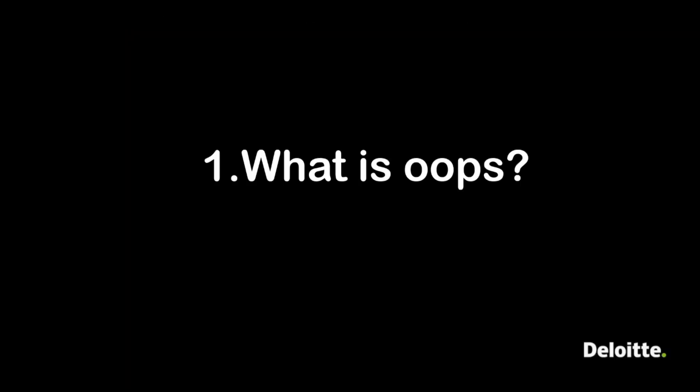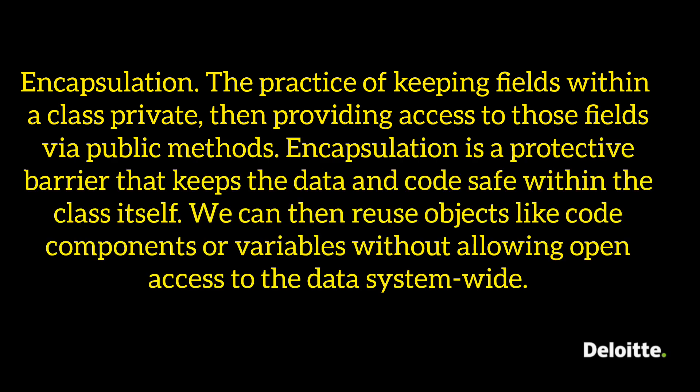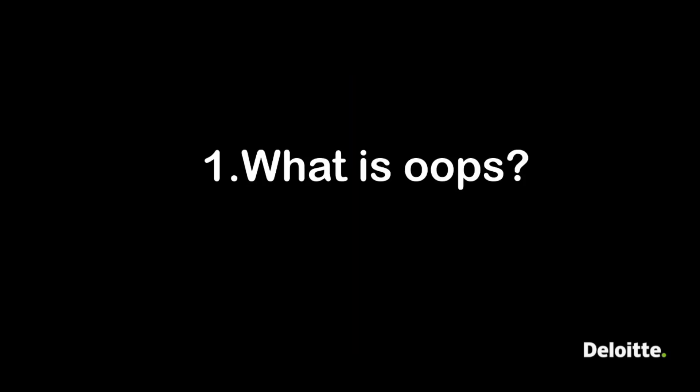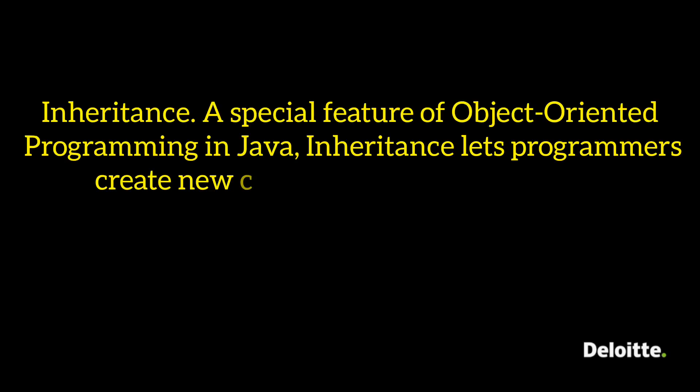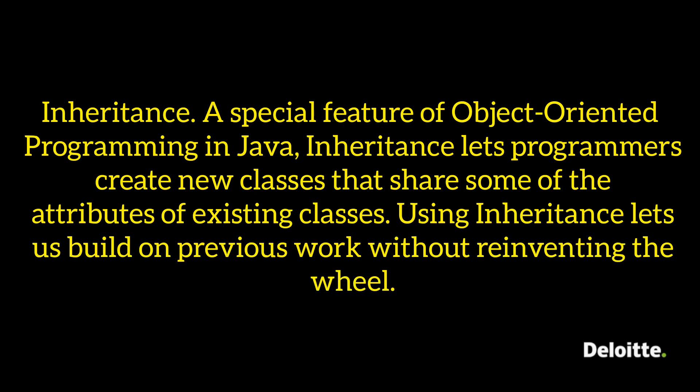Encapsulation is the practice of keeping fields within a class private and then providing access to those fields via public methods. It is a protective barrier that keeps the data and code safe within the class itself. We can then reuse objects like code components or variables without allowing open access to the data system-wide.